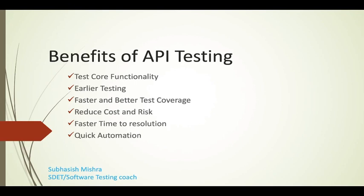API testing is time-effective compared to GUI testing. It also helps reduce cost and risk. With API testing, we can find minor bugs before GUI testing — these minor bugs can become very big during GUI testing. Finding them early during API testing is cost-effective for the company and also reduces risk.